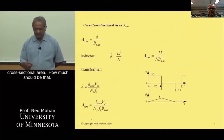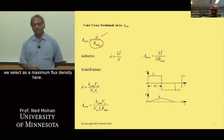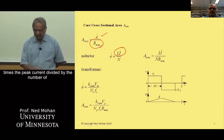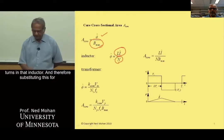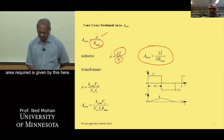The core cross-sectional area should be the maximum flux the circuit will have divided by whatever we select as the maximum flux density B_max. For an inductor, the maximum flux is L times the peak current divided by the number of turns. Substituting this for peak flux, the required core cross-sectional area is given by that expression.